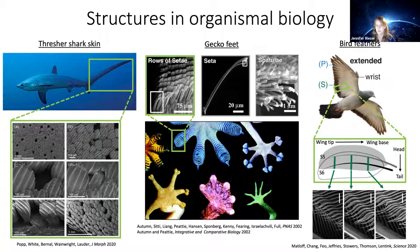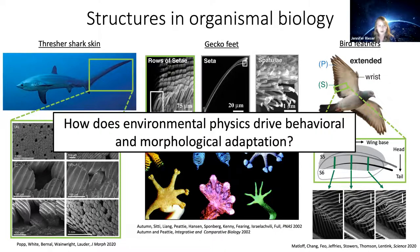These are just a few examples of these complicated structures and some of the functions that people have discovered. I'm interested in how environmental physics drives the behavioral and morphological adaptation of features on animal exteriors.